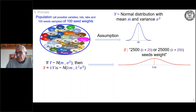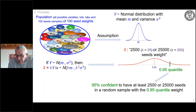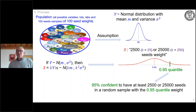For our problem, we use this property with K equals 25 and K equals 250 to derive the 2,500 and 25,000 seed weights, which is our objective. The distribution of, for example, 2,500 seed weights is also a normal distribution, with mean equal to K times M and variance equal to K squared times sigma squared. We then consider the 0.95 percentile, and by taking that as the weight to be recommended in the ISTA rules, we ensure 95% confidence of having at least 2,500 or 25,000 seeds in a random sample.